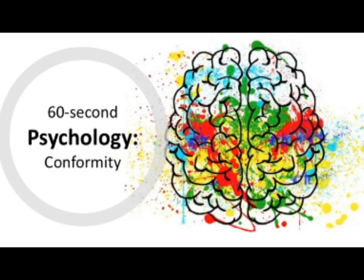As well as different types of social influence, there are different types of conformity. Each type of conformity essentially describes how far someone conforms based on whether they genuinely believe in the group's behaviour and whether it is a temporary or permanent change in behaviour.